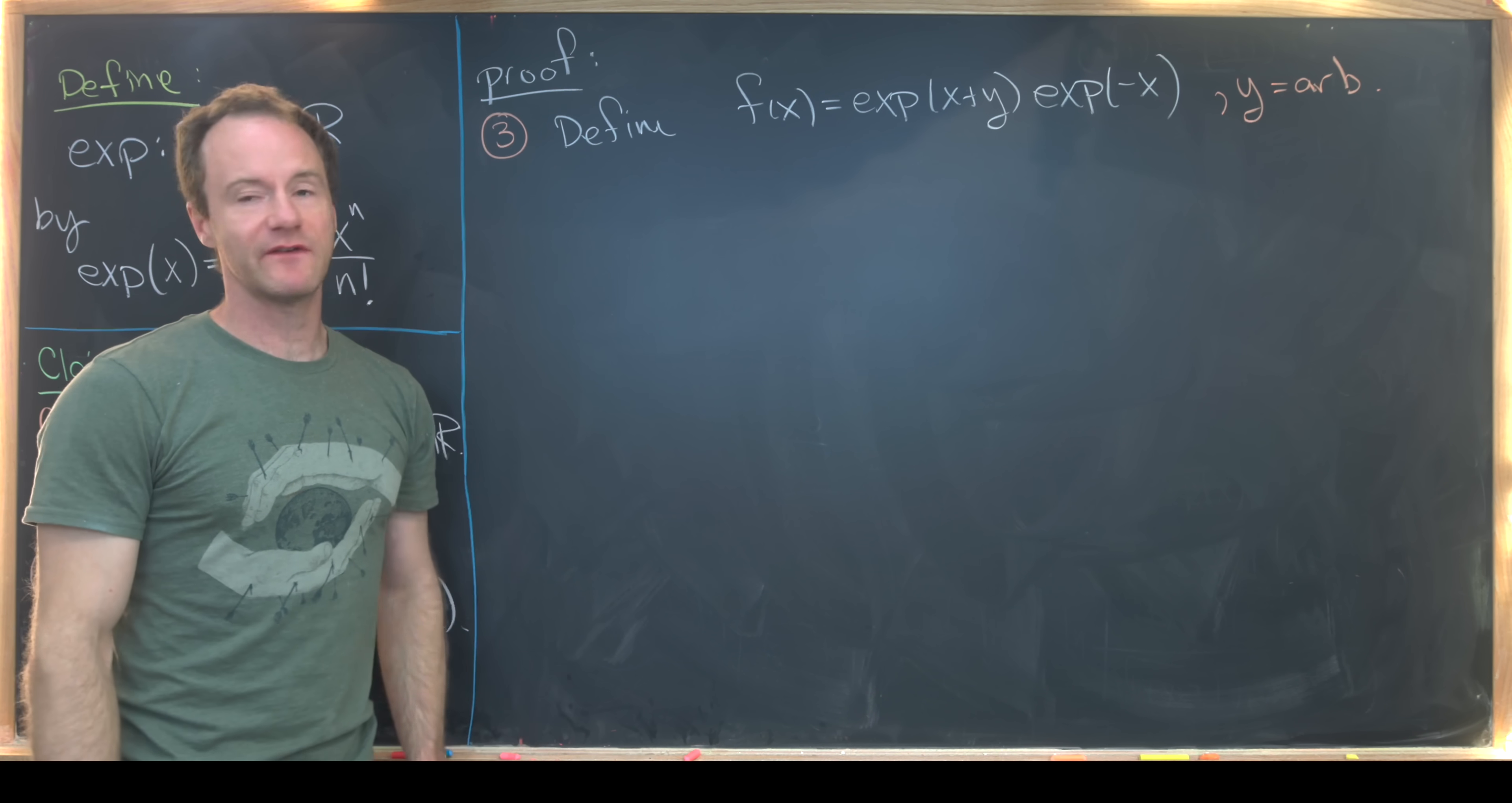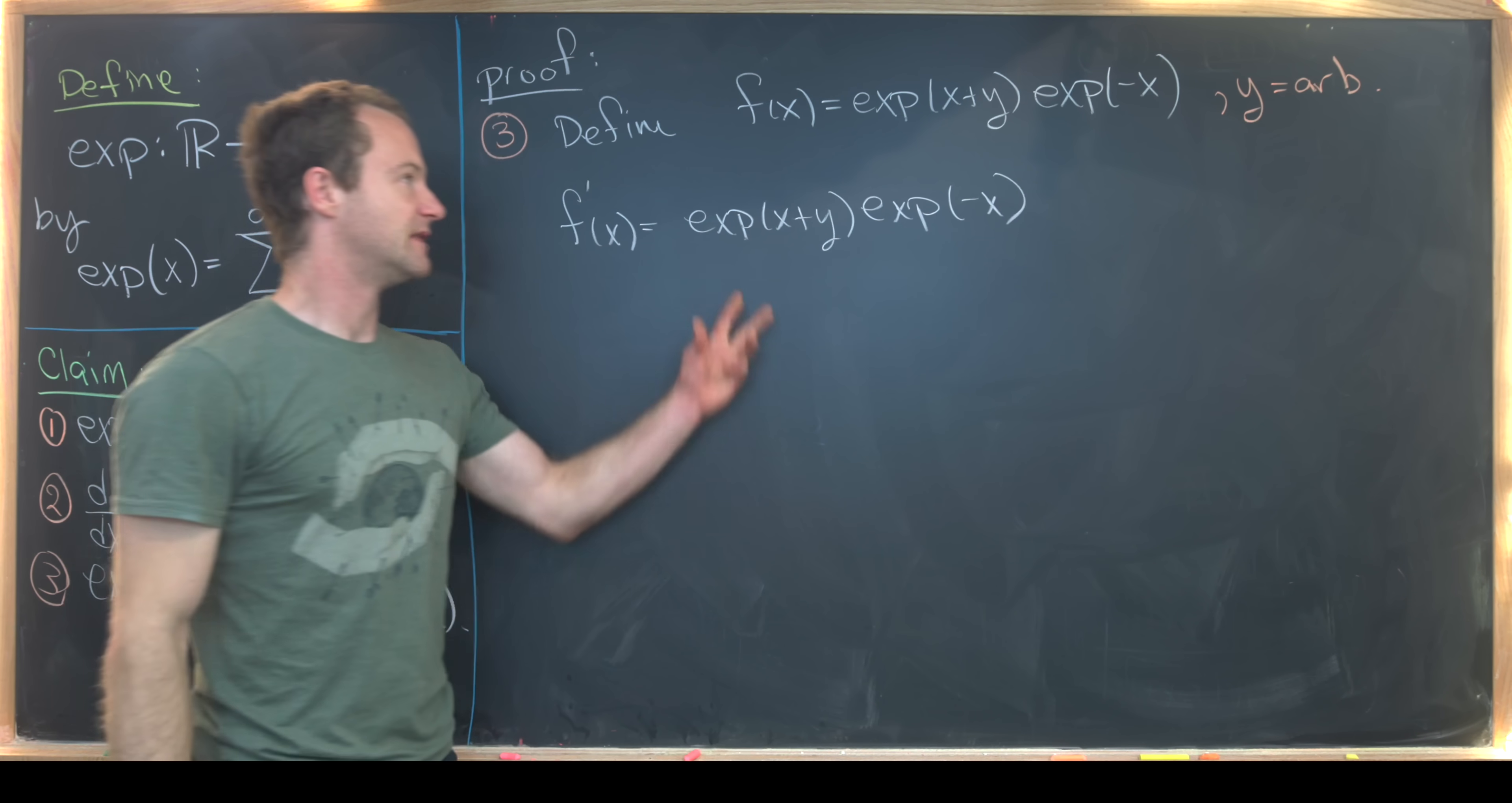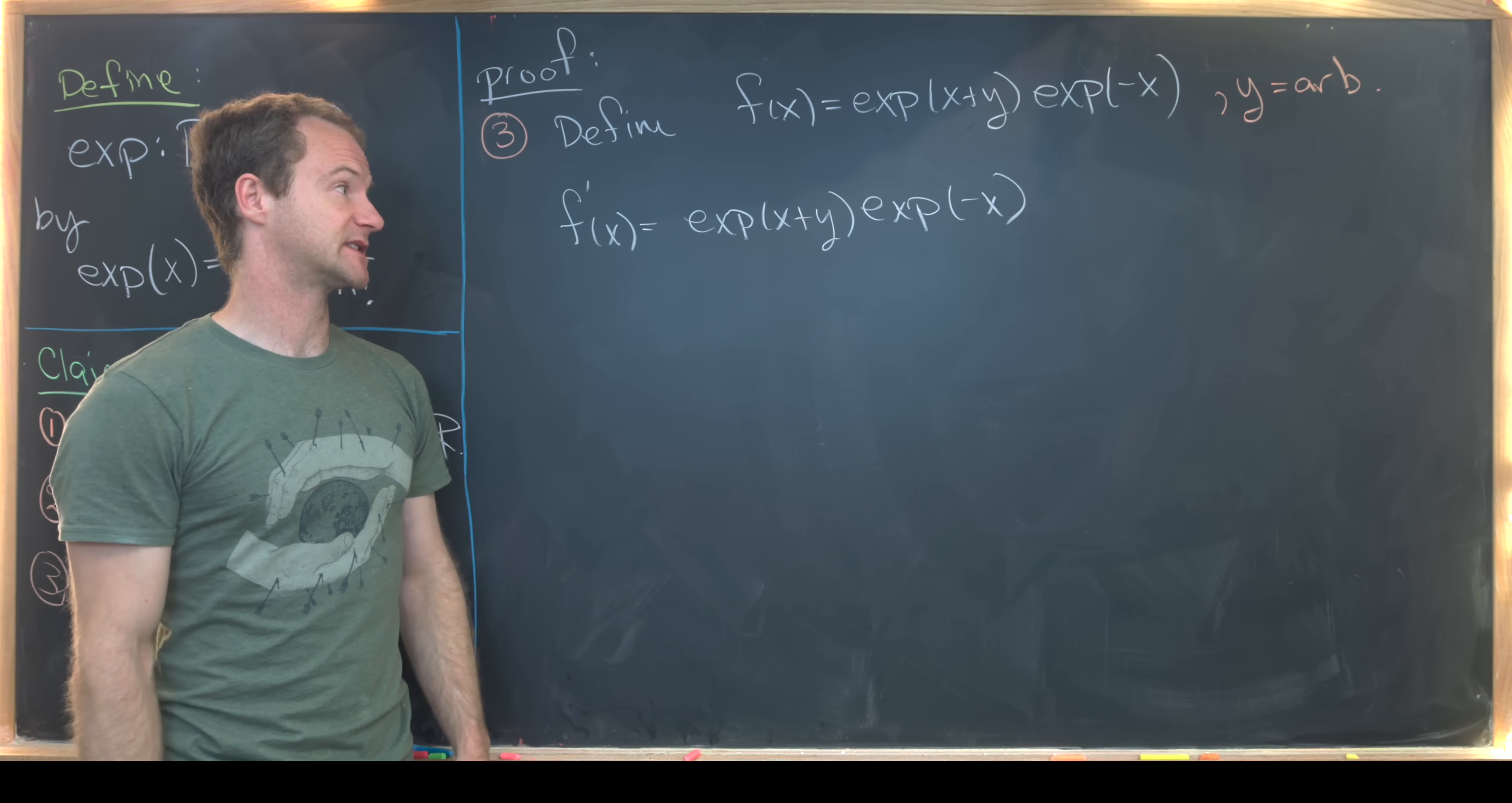Now we can take the derivative of f using the chain rule and the product rule. So let's do that. So here we'll get exp(x+y) times exp(-x). That's from taking the derivative of this first function. Notice the derivative of x+y is just one. That's because y is arbitrary. It's like a constant with respect to x.